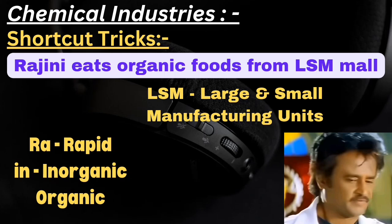The next shortcut is: 'Rajini eats organic foods from LSM mall.' R-I-N in Rajini represents 'rapid growth in inorganic and organic sectors.' 'Organic foods' represents the organic sector. LSM mall - L represents large, S represents small, M represents manufacturing - meaning chemical industry comprises large and small manufacturing units.